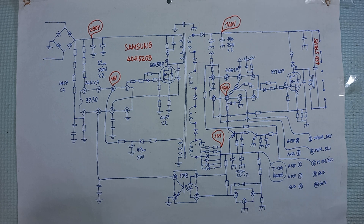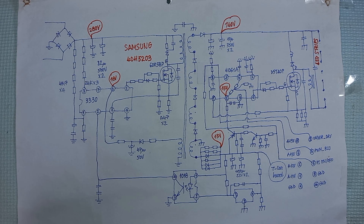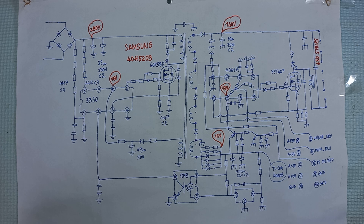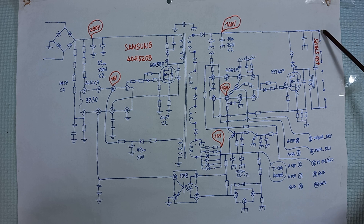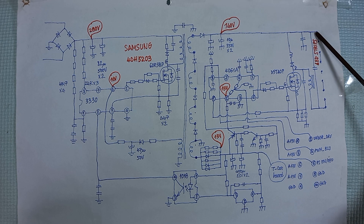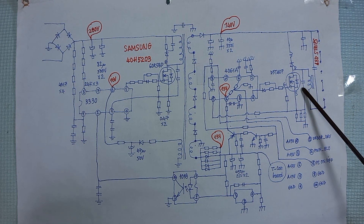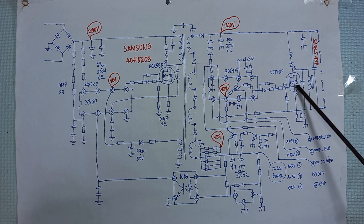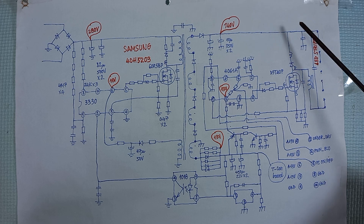When repairing LED TV, if the screen doesn't light up, you have to check the LED strips. If the LED strips are damaged, the voltage here will be high — about 180 volts. If the MOSFET doesn't work, the voltage here will be low — about 80 volts.